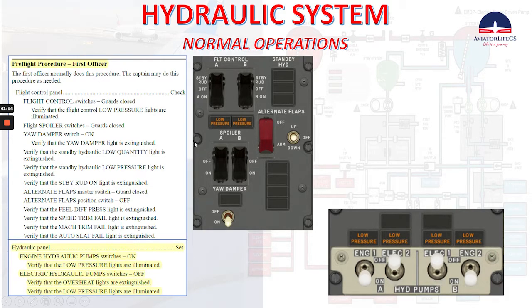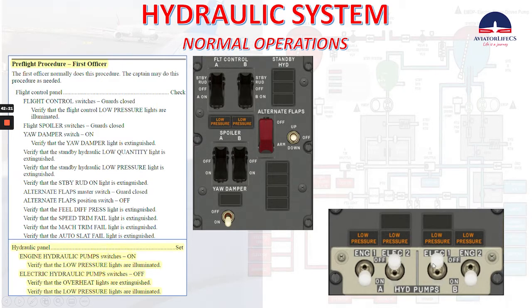This is what we want to see. When we get to the hydraulic panel, we need to check that the engine hydraulic pump switches are on — on and on. Verify that the low pressure lights are illuminated. Electric hydraulic pump switches off — that's the position we want to see. Verify that the overheat lights are extinguished. Verify that the low pressure lights are illuminated. We then continue to the before start procedure: hydraulic panel set.